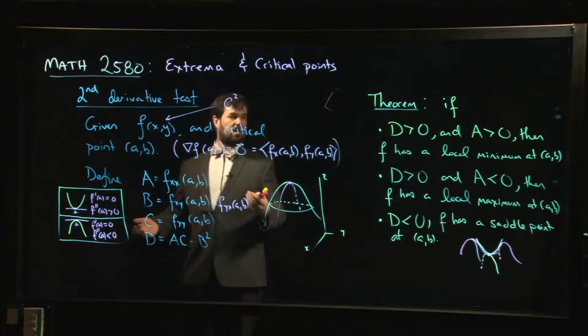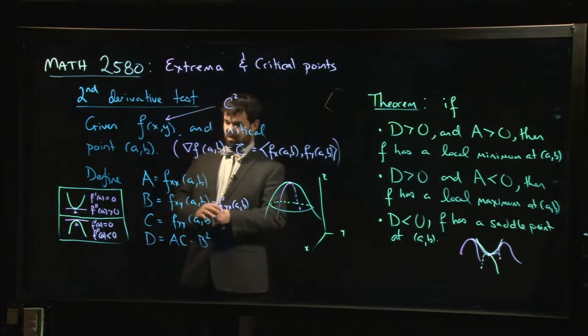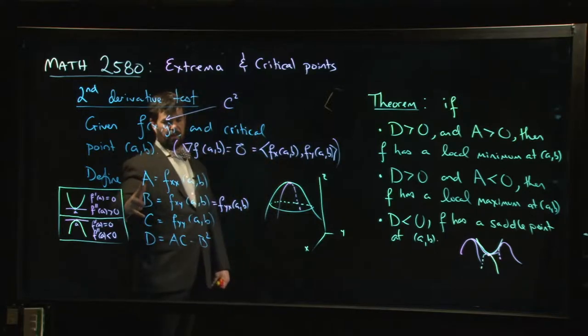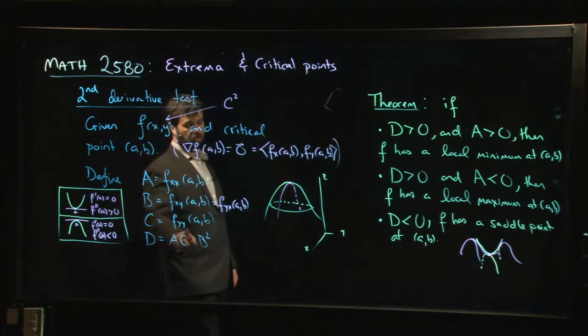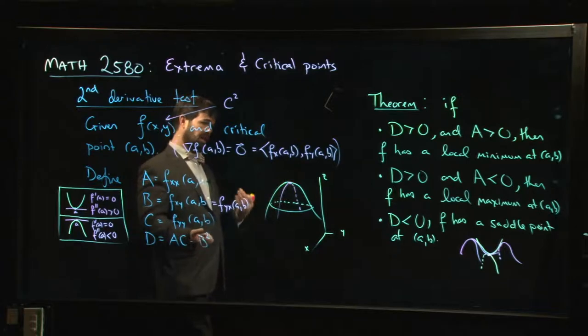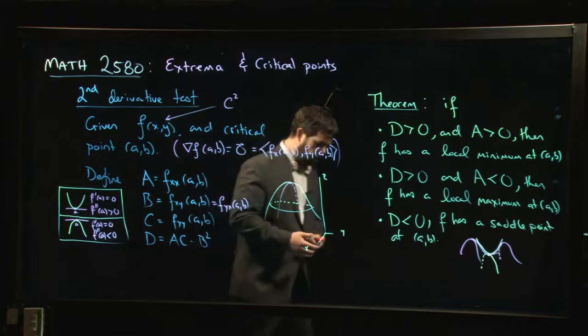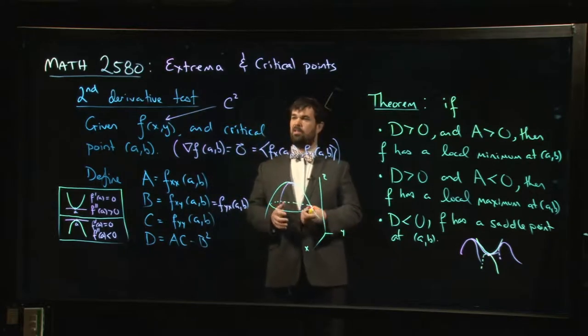But the situation that's maybe slightly more subtle that you have to think carefully about is that it could also happen that A and C have the same sign, but in absolute value, they're not as big as B. So like if A was two and C was two, but B was equal to three, then AC minus B squared is still going to be negative. D is going to be negative. You still have a saddle point, even though you're curving upwards in both the X and the Y directions, you might still end up with a saddle point.